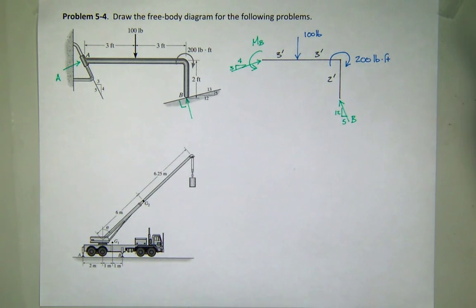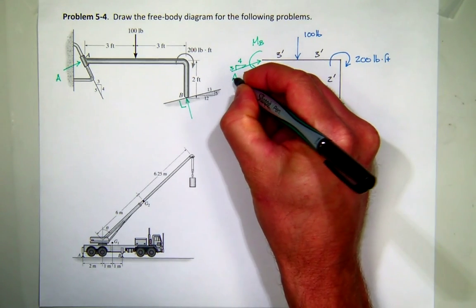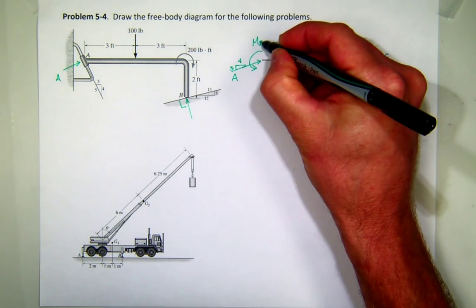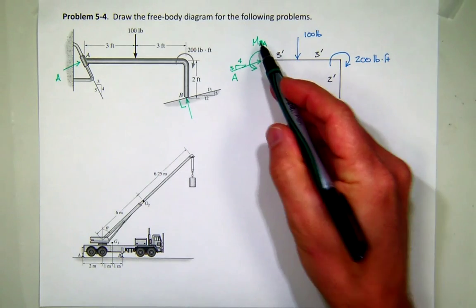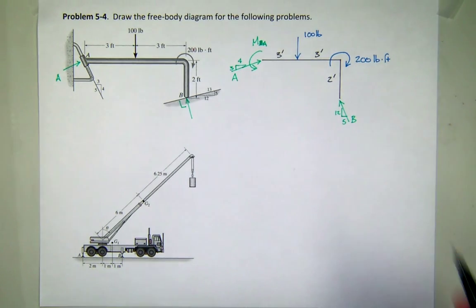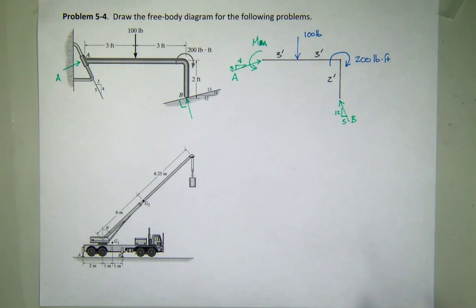And that's it. So how many unknowns do I have? Well, I have my unknown force at A. Oh, this is a moment at A, right? A moment at A, and this unknown force I call B. One, two, three unknowns. Any questions about that?